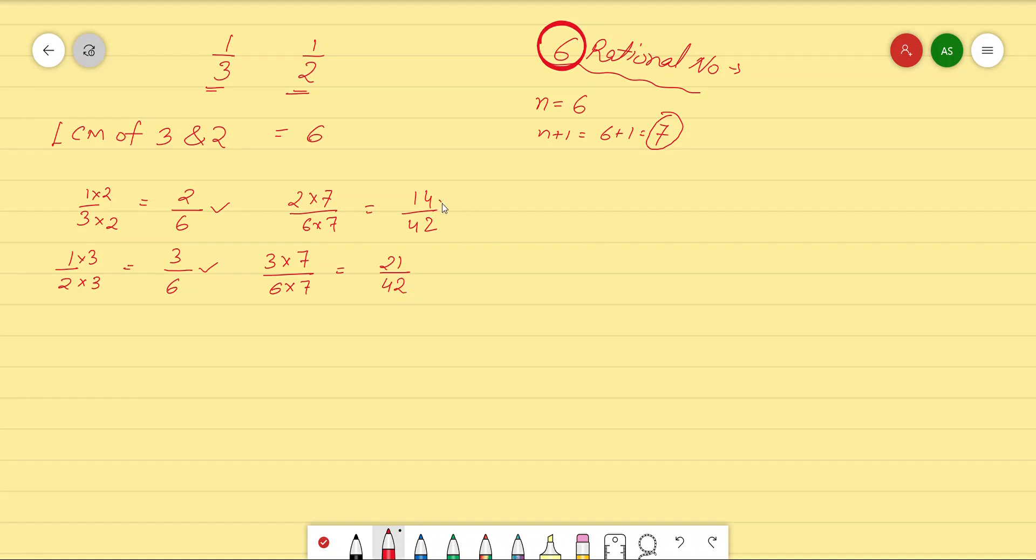Now, if you can see over here, we have 14 and here 21 divided by 42 in both the cases. After 14, we have 15, 16, 17, 18, 19, 20, all divided by 42.